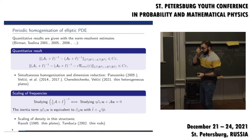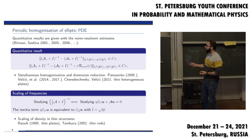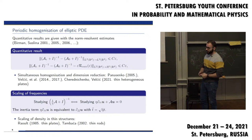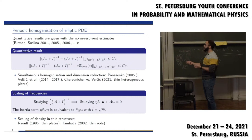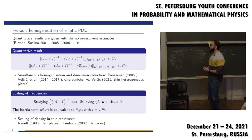People have been working on simultaneous homogenization and dimension reduction for years. For example, Professor Panasenko has a book on thin composite materials, and my supervisor has studied this from the standpoint of nonlinear stuff, gamma convergence, and so on. Recently, Professor Cherednichenko and Velčić obtained norm-resolvent estimates for the case of plates, and I will show analogous results for the case of rods.